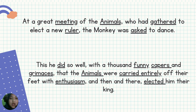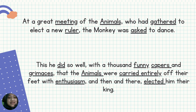Kita yang pertama akan menganalisis tentang morphology-nya. Yang morphology ini ada underline. Kita langsung analisis: meeting, animals, gathered, and then axe, deed, capers, and grimaces, animals, carriage, and then elected. Kata-kata yang tadi disebutkan ini adalah morpheme yang ditambah inflectional — walaupun ditambah akhiran -ing, akhiran -ed, akhiran -s, dia tidak akan mengubah makna. Ini morpheme yang ditambah inflectional.